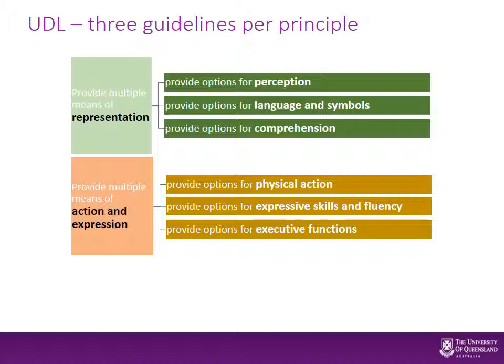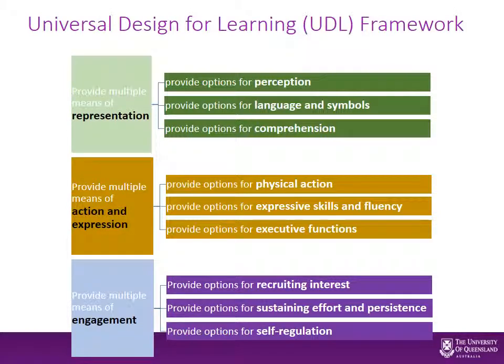Thinking about action and expression, we can think about physical action, expressive skills and fluency, and then options for executive functions. Executive functions are those aspects of the brain that are guiding the tasks that we do — using our strategies for planning, for organising what we're going to do next, for retaining things in memory — those sorts of things that some students find particularly difficult, that we can support them through the learning process. The third principle is multiple means of engagement: how do we get students interested to start with, how do we sustain that effort and persistence, leading to that overarching goal of self-regulation so they learn how to maintain their interest in the learning themselves.